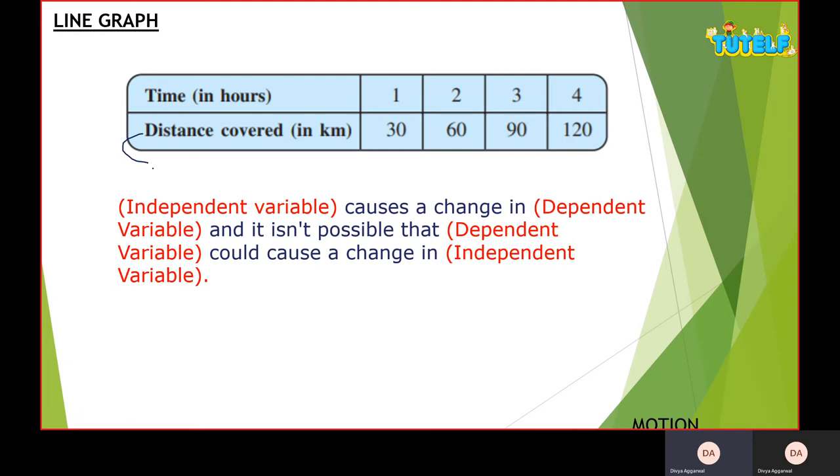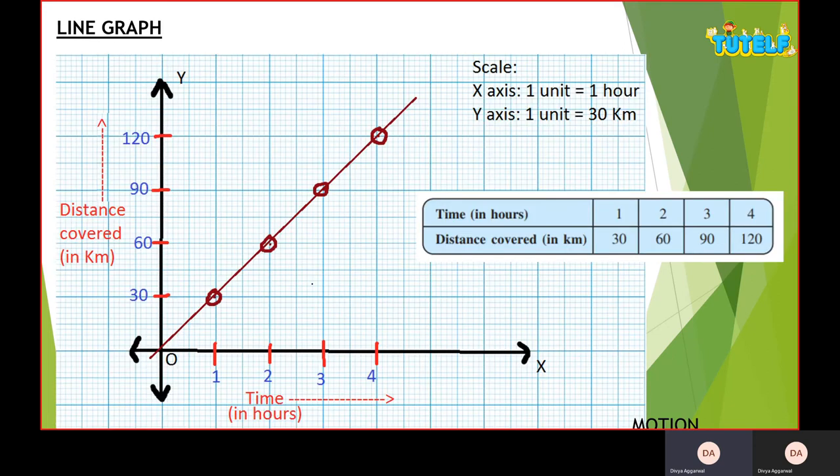Usually we always take time on x-axis because time is an independent variable. But if we take distance, and our distance is independent and time is dependent, then why does it not work? It is not possible that distance causes a change in time. Time causes a change in distance, and it is not possible that distance could cause a change in time. That's why our time is always on x-axis.